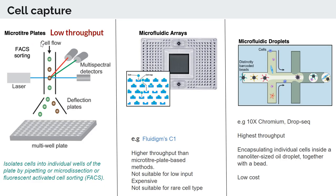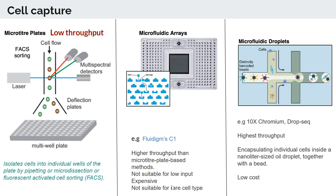The most expensive and low-throughput method is the plate-based method: you isolate cells into individual wells either by pipetting or FACS (fluorescent activated cell sorting). This is laborious, time-consuming, costly, and captures very few cells — hence very low throughput. Next is the array-based method, where each well of the array traps a single cell — for example, the Fluidigm C1. It has higher throughput than plate-based, but is still expensive, requires more starting material, and is not suitable for low-input samples or studying rare cell types.